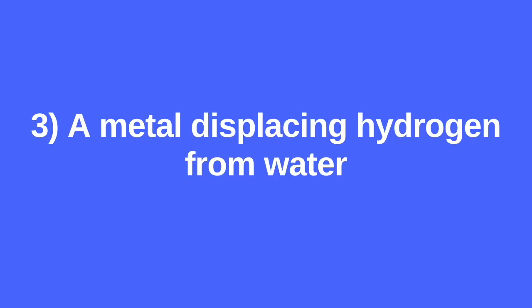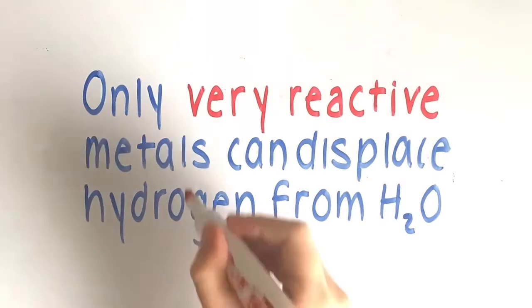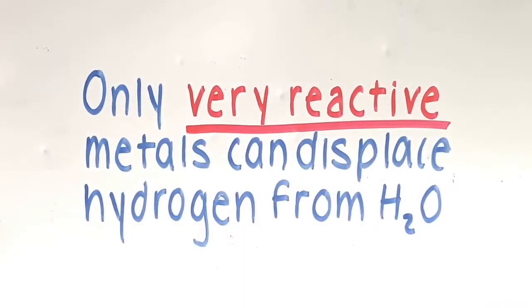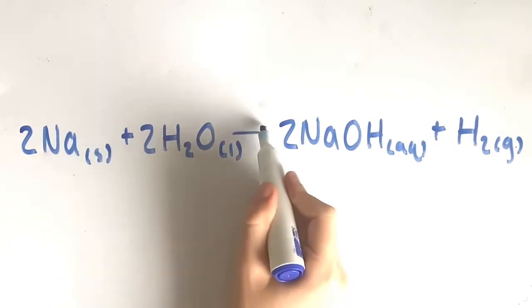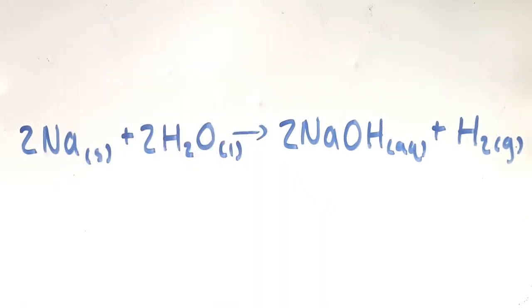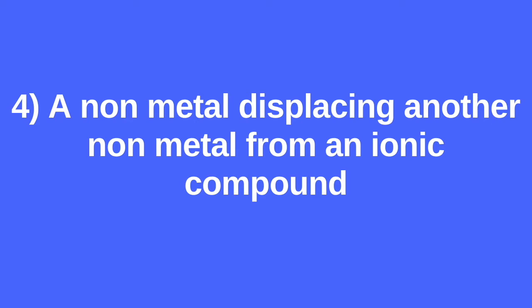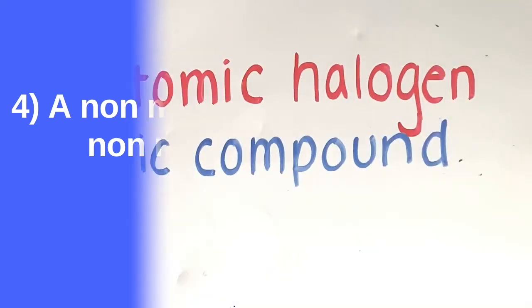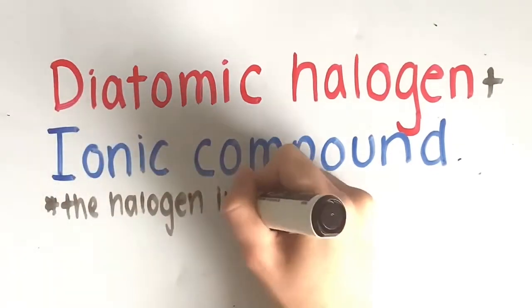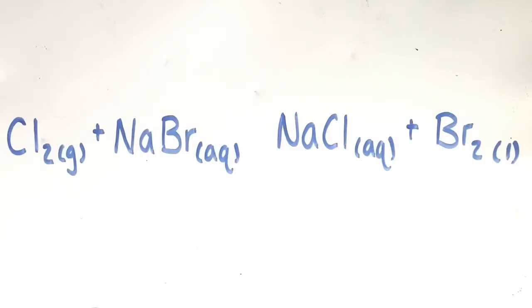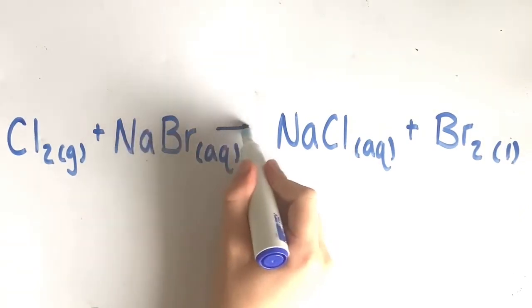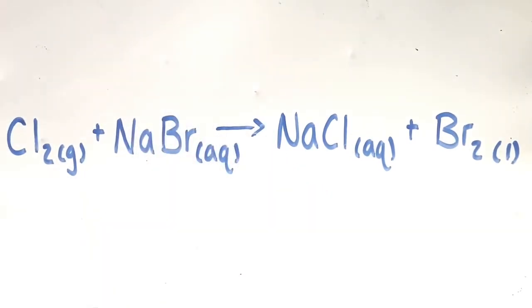Thirdly, we have a metal displacing hydrogen from water. Only very reactive metals can displace hydrogen from water. An example would be sodium plus water yields sodium hydroxide and hydrogen. Finally, we have a non-metal displacing another non-metal from an ionic compound. When a diatomic halogen reacts with an ionic compound, the halogen in the compound gets replaced. For example, chlorine plus sodium bromide yields sodium chloride plus bromine.